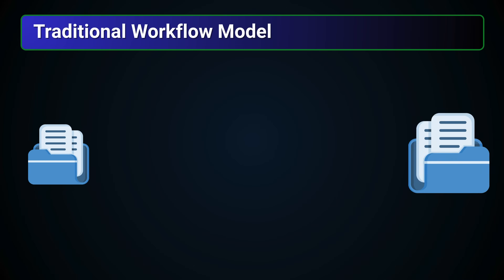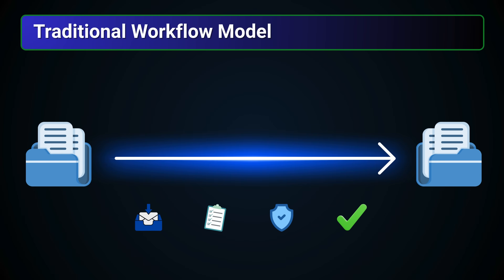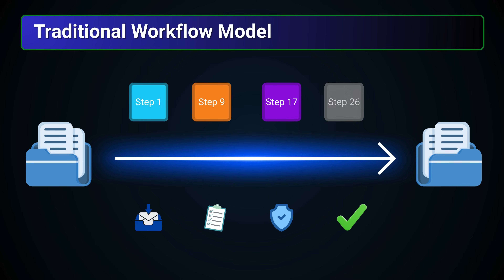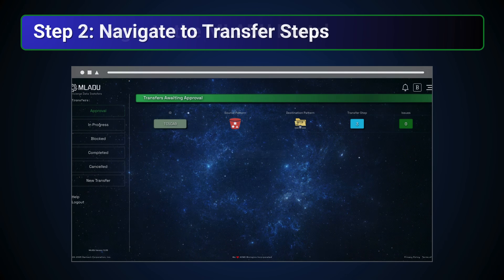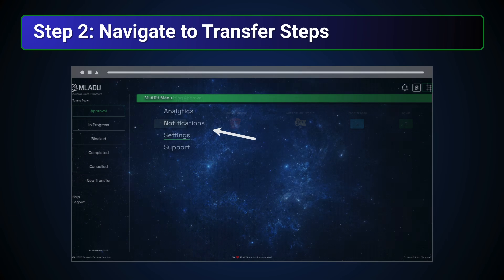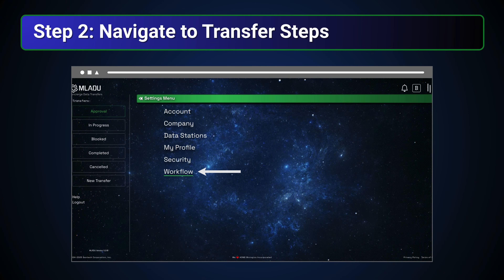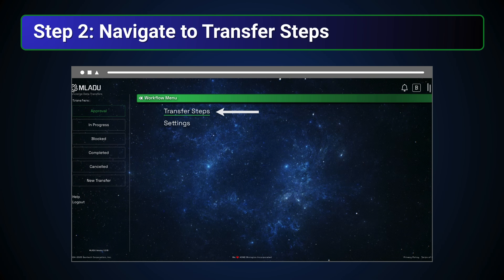Now that we've covered the foundation of Maladu's traditional workflow model, let's dive into how you can easily access Maladu's rigid set of transfer steps. To begin, navigate to the Maladu login page and enter your authorized user credentials to access your Maladu portal. Once logged in, open the menu in the upper right corner of your screen and select Settings. Next, choose Workflow, and finally, click on Transfer Steps.